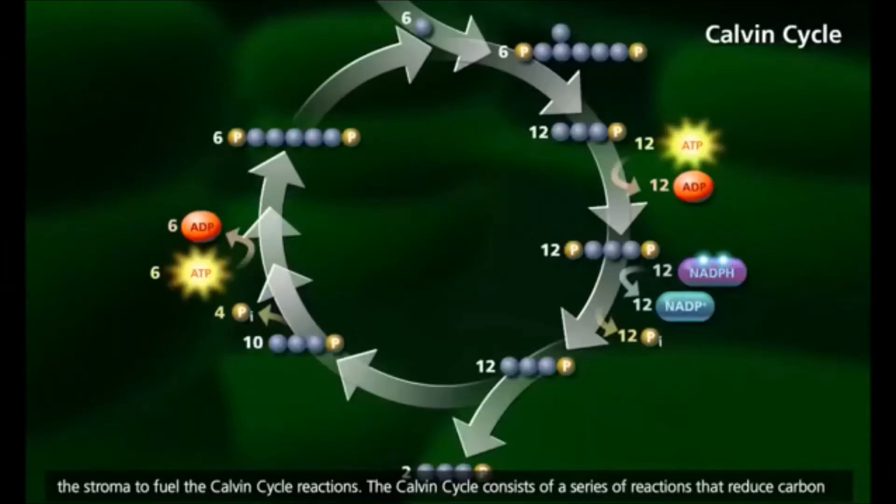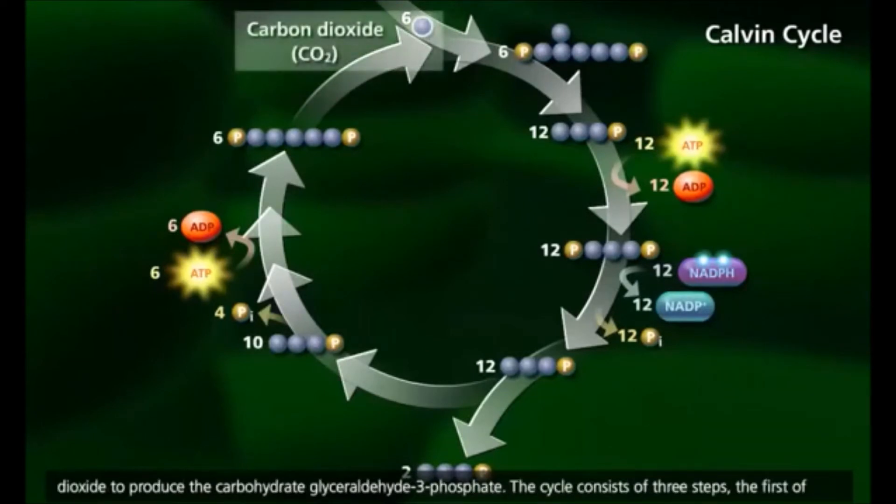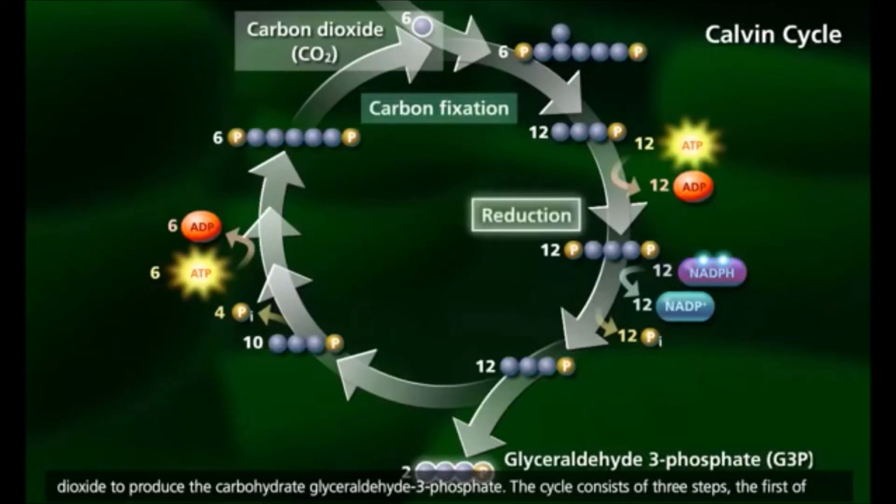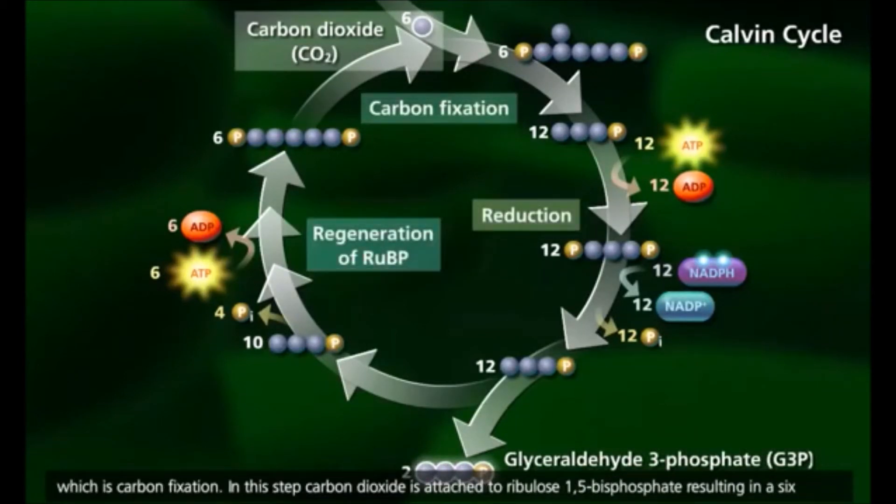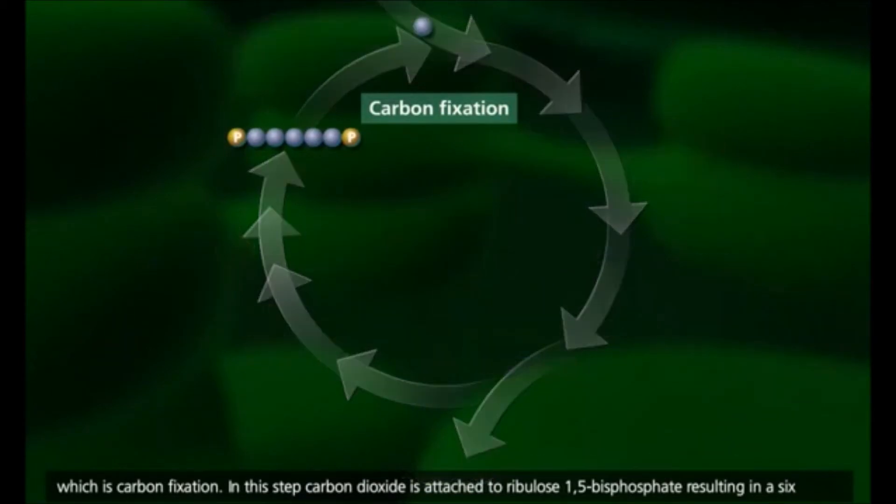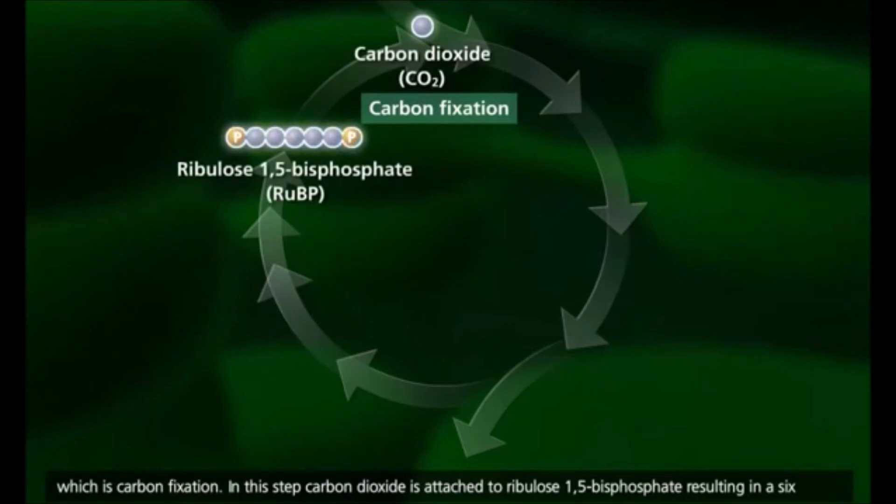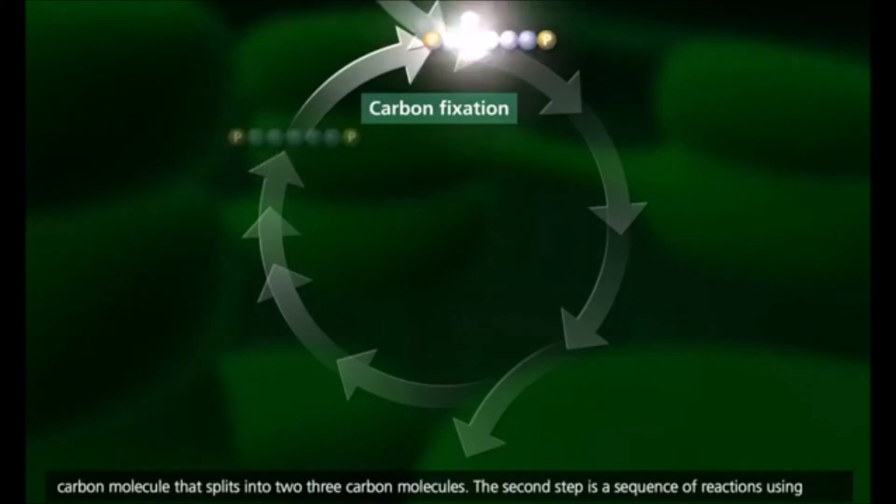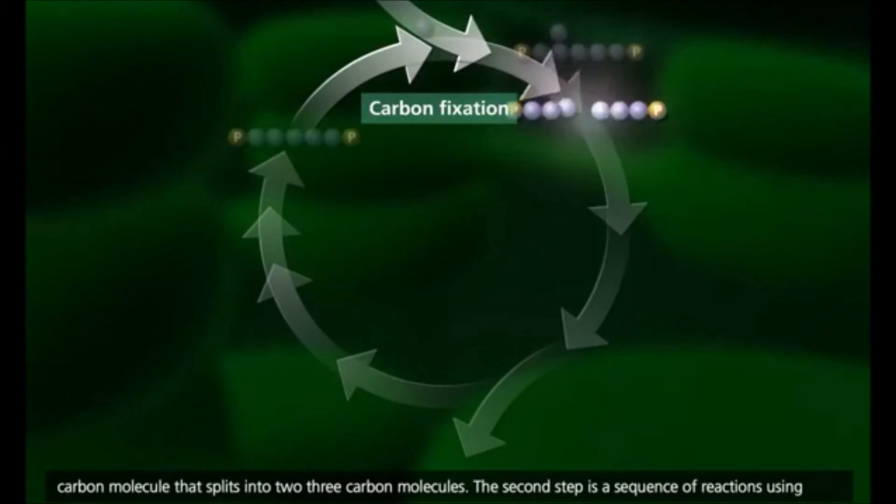The Calvin cycle consists of a series of reactions that reduce carbon dioxide to produce the carbohydrate glyceraldehyde-3-phosphate. The cycle consists of three steps, the first of which is carbon fixation. In this step, carbon dioxide is attached to ribulose-1,5-bisphosphate, resulting in a six-carbon molecule that splits into two three-carbon molecules.